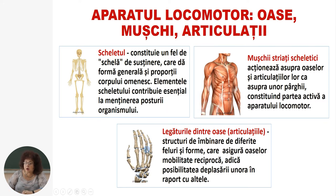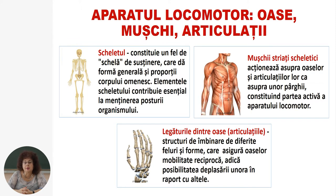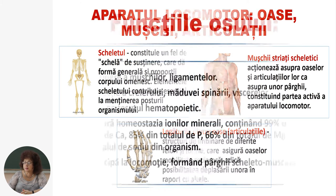Al treilea component al aparatului locomotor sunt legăturile dintre oase sau articulațiile. Sunt structuri de îmbinare de diferite feluri și forme, care asigură oaselor mobilitate reciprocă, adică posibilitatea deplasării unora în raport cu altele.